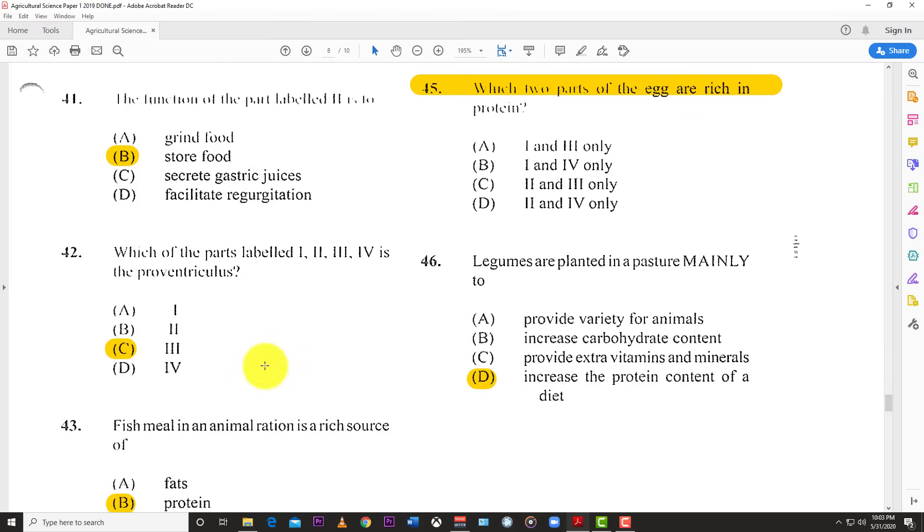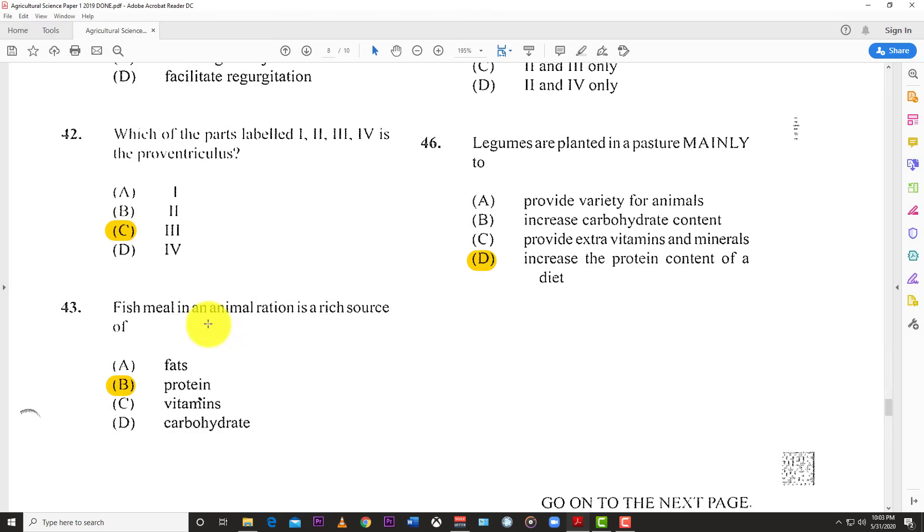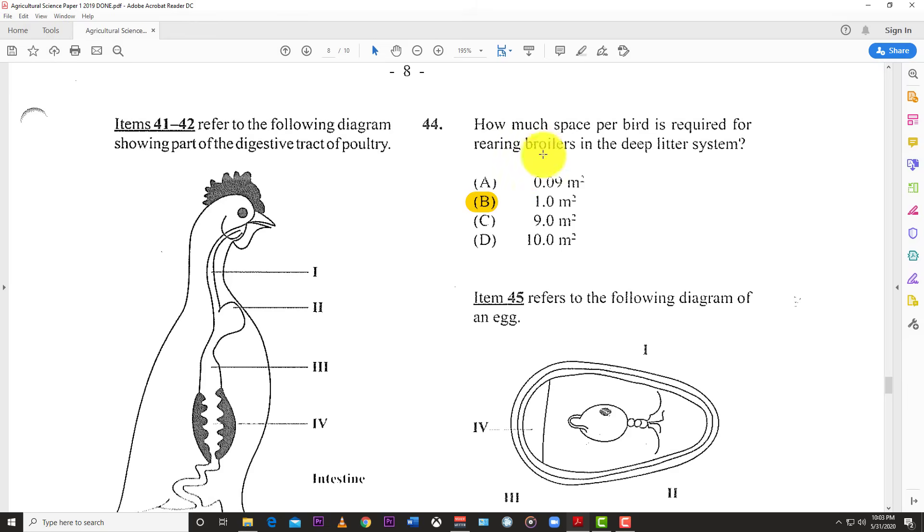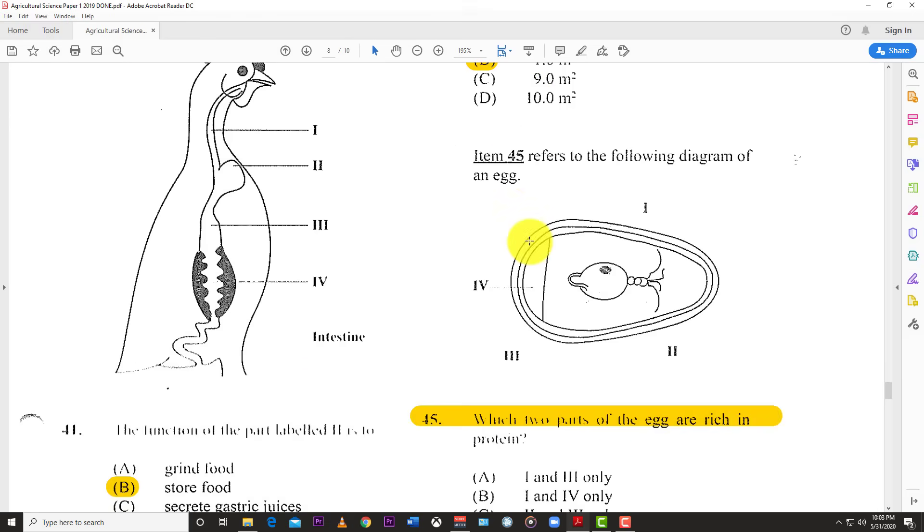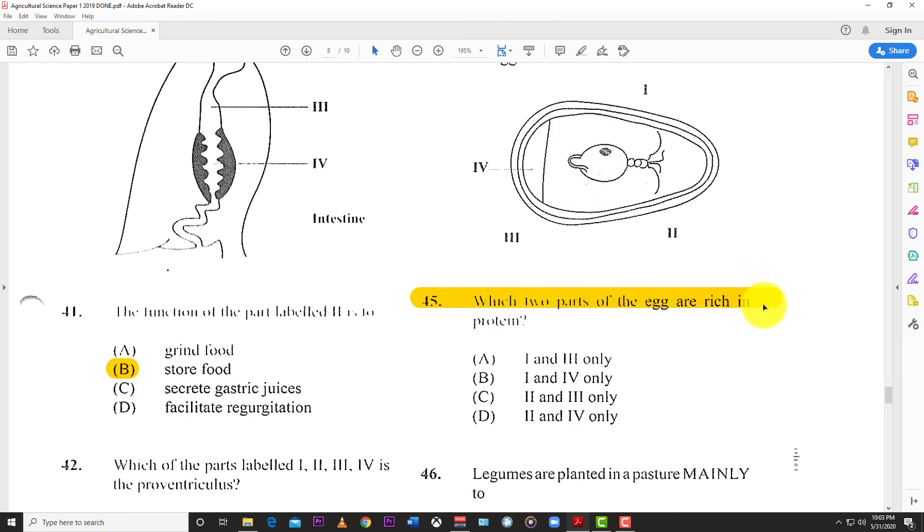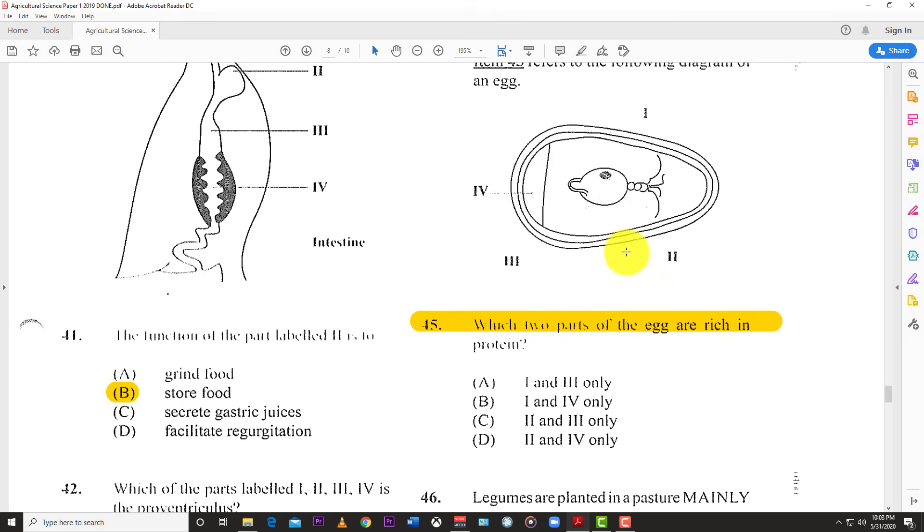Number 43: Fish meal in an animal ration is a rich source of protein. Number 44: How much space per bird is required for rearing broilers in the deep litter system? The answer is 1 meter squared. Number 45 refers to a diagram of an egg asking which two parts are rich in protein, but I couldn't do this one because the lines have faded and I don't know where they're pointing.